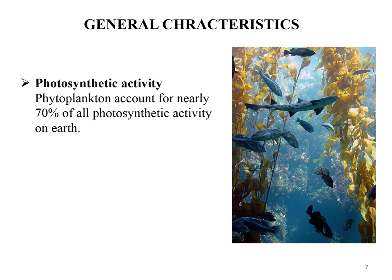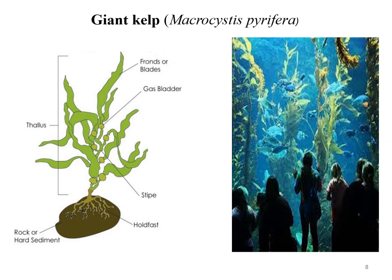Phytoplankton account for nearly 70% of all photosynthetic activity on Earth, absorbing carbon dioxide, recharging the atmosphere with oxygen, and supporting the web of aquatic life. This figure shows that giant kelp is the largest seaweed, reaching heights of more than 100 feet. Ecologists call it a foundation species or ecosystem engineer. It provides a huge forest-like environment undersea and tremendous productivity in supplying food for the ecosystem. The body of giant kelp consists of a holdfast like a root, a stipe like a stem, and a blade like a leaf.